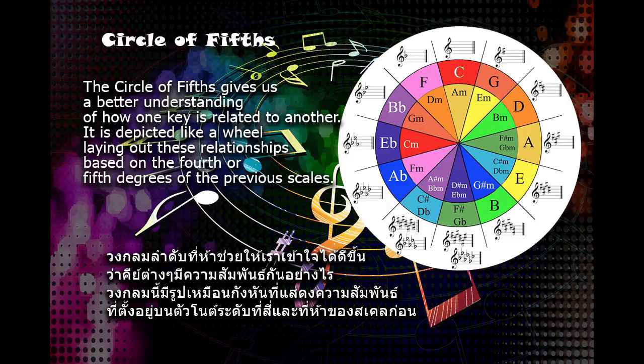The circle of fifths gives us a better understanding of how one key is related to another. It is depicted like a wheel, laying out these relationships based on the fourth or fifth degrees of the previous scales.